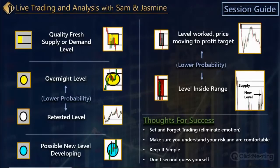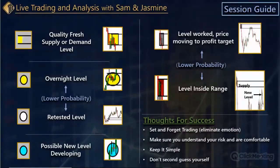Dennis called it a 'probability gauge' — that's exactly what this is. As we know, with probability typically comes profit zone; probability and profit zone typically go hand in hand. So that's what this is meant to do — not to complicate the sessions, but the opposite: to help you make sense of the sessions.